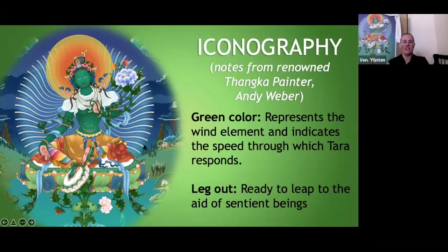So Tara belongs to the Amitabha Buddha family, but she has the color associated with Amoghasiddhi — the color of wind energy, representing swiftness, all-encompassing action, movement. Wind in Tibetan iconography is represented by the color green. So when you see green, that's what it represents. These are probably the two most classically known things about Tara iconography: she's swift, and her leg out is ready to leap to the aid of sentient beings. Those are the two most important things to think about.